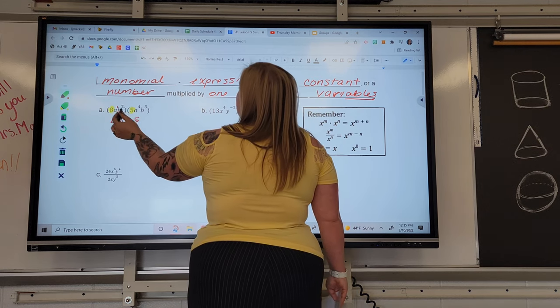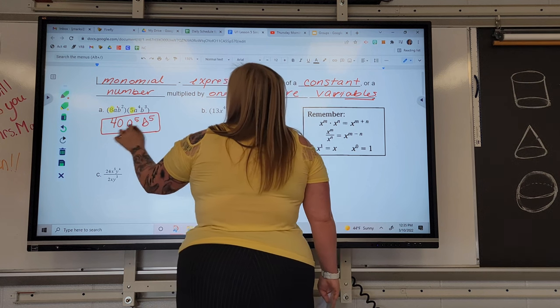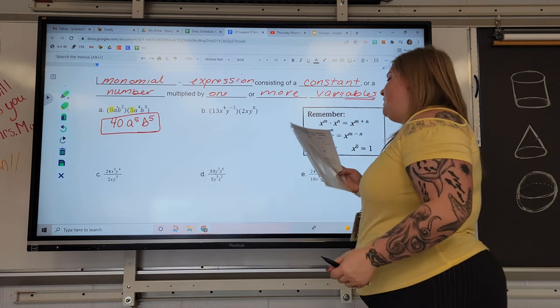B to the second, B to the third, two of them, and three of them also makes five of them. So we have 40, A to the fifth, B to the fifth.